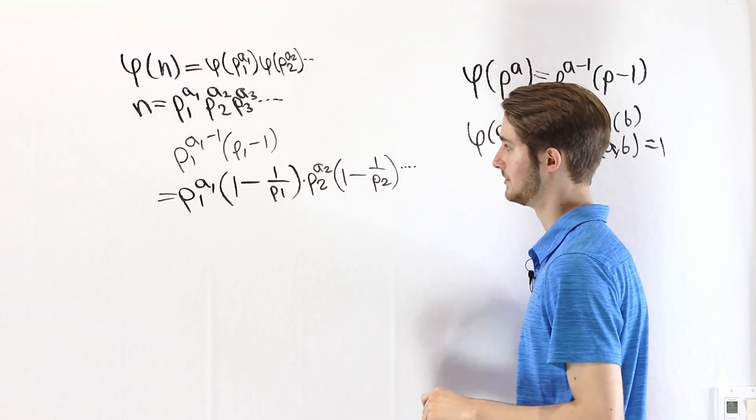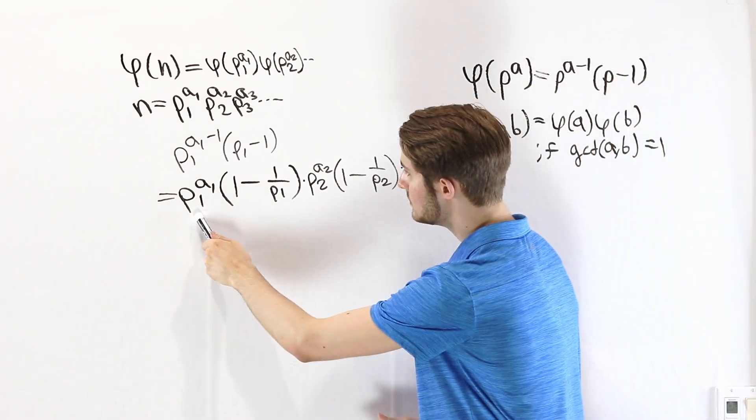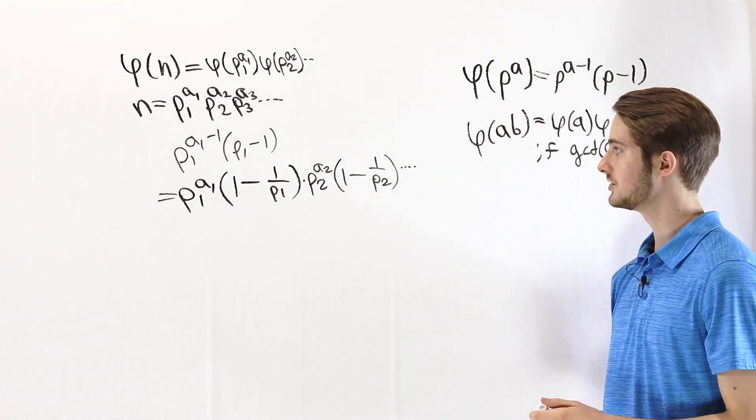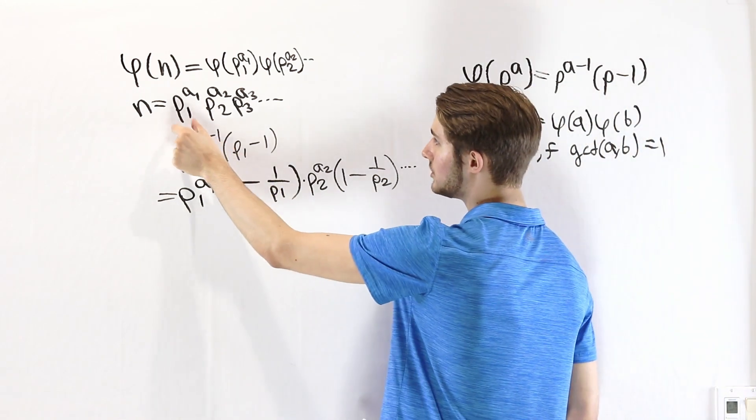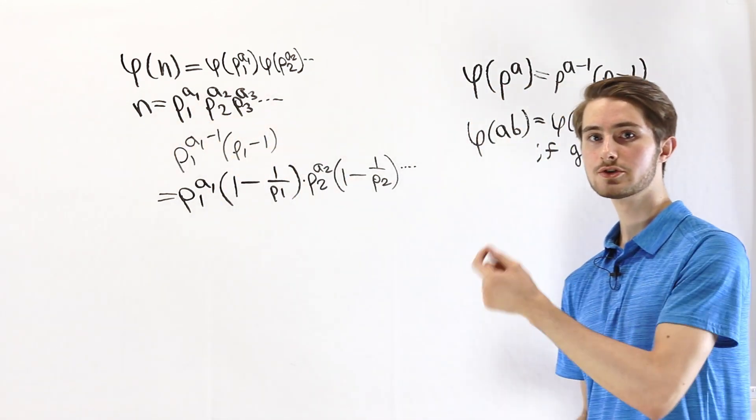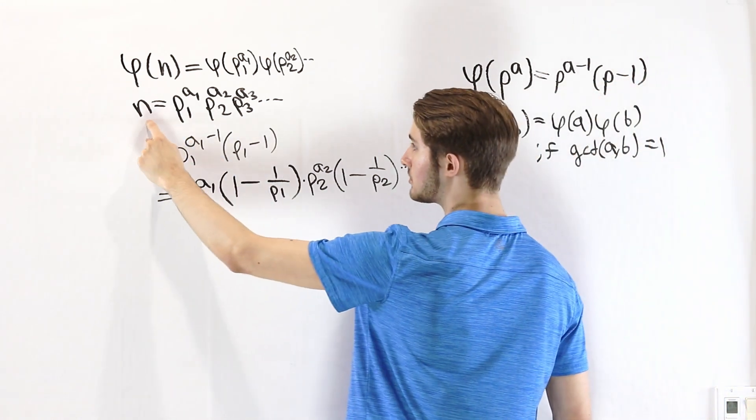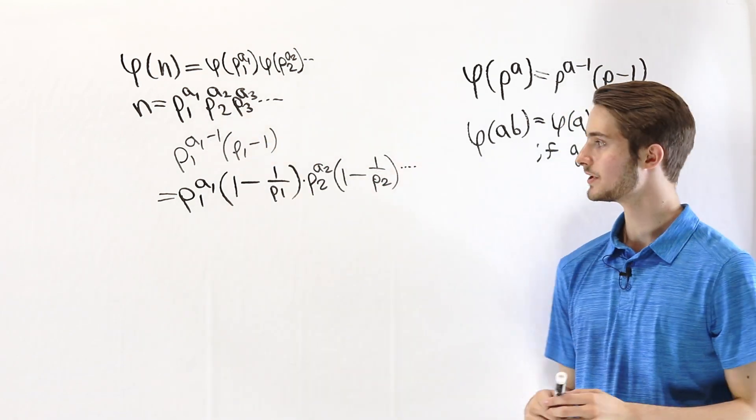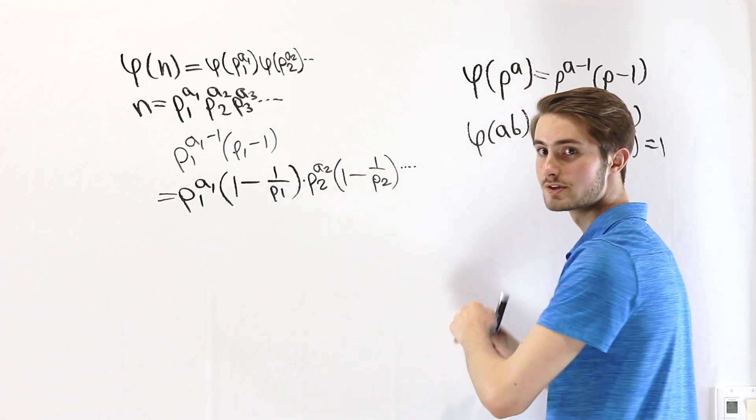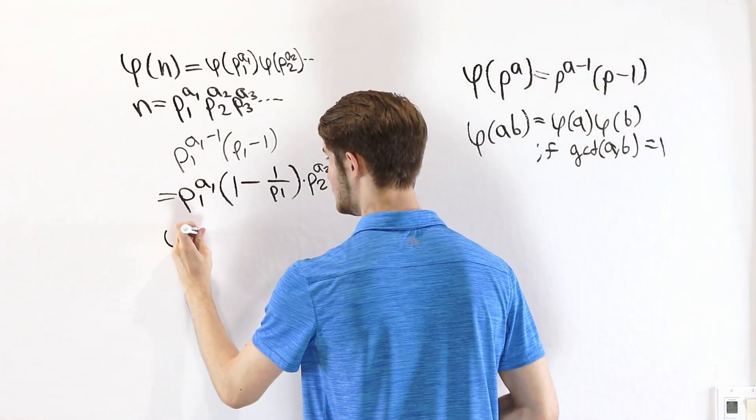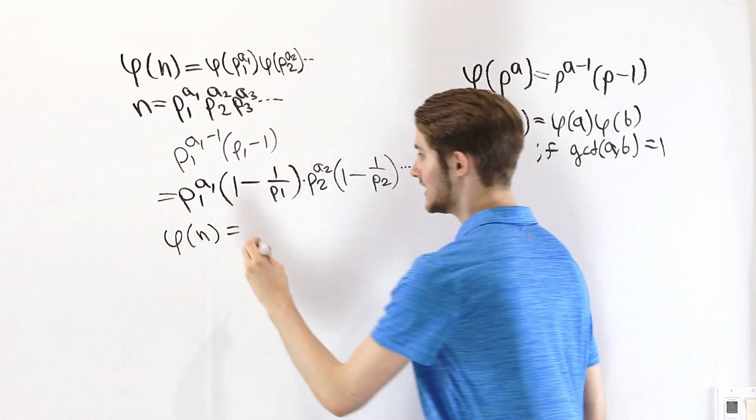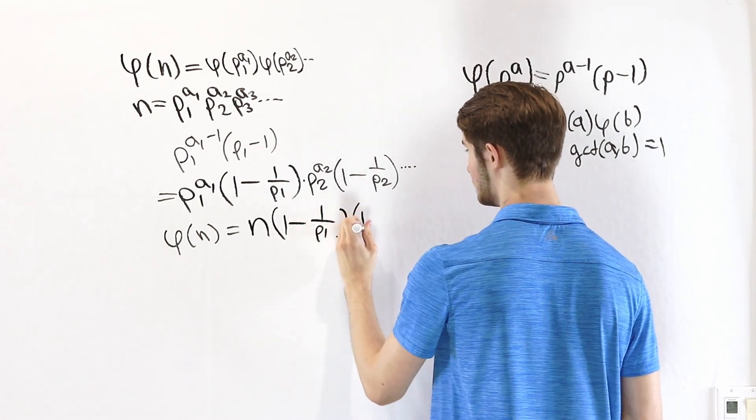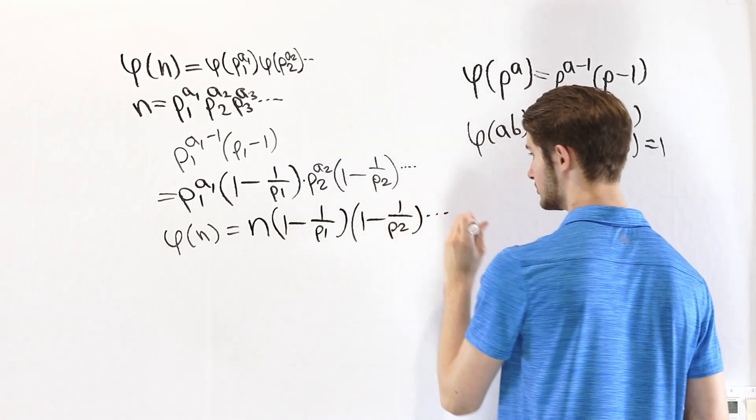Now we can actually simplify this a little bit. Because notice that we have p1 to the a1 times p2 to the a2, and then after that we would have p3 to the a3, and so on. We're going to have all of these prime factors. And all of those prime factors together make up the prime factorization for n. So when we multiply them together, we're going to get n as our result. So if we take out each of these prime powers and put it at the front, what we're going to get is phi of n equals n times 1 minus 1 over p1 times 1 minus 1 over p2, and so on.